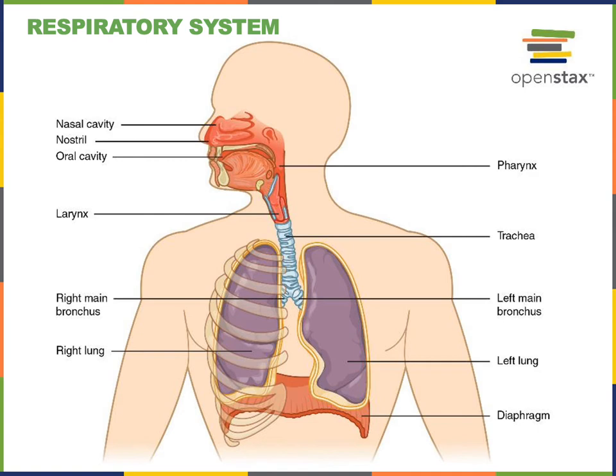The major organs of the respiratory system are the lungs, as well as the airways that connect in and out of the lungs, and the muscles of respiration that are responsible for pulmonary ventilation — drawing air in and out of the lungs. The airways are connected to the nasal cavity and oral cavity.